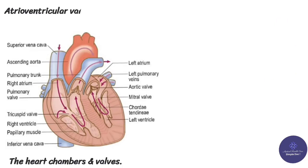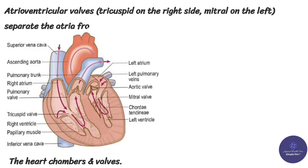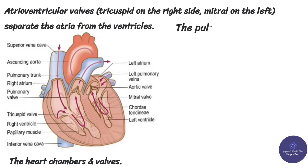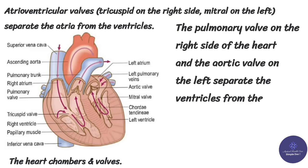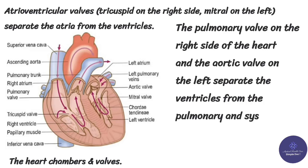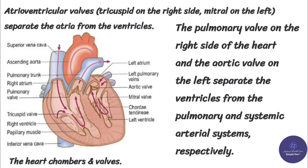Atrioventricular valves — tricuspid on the right side, mitral on the left — separate the atria from the ventricles. The pulmonary valve on the right side of the heart and the aortic valve on the left separate the ventricles from the pulmonary and systemic arterial systems, respectively.